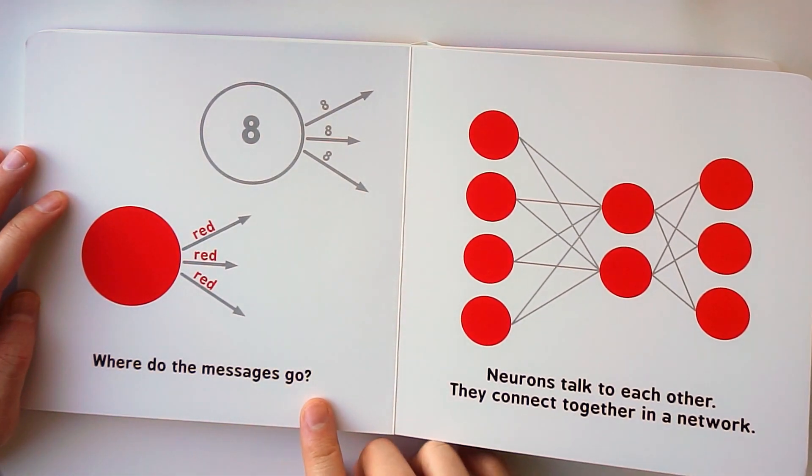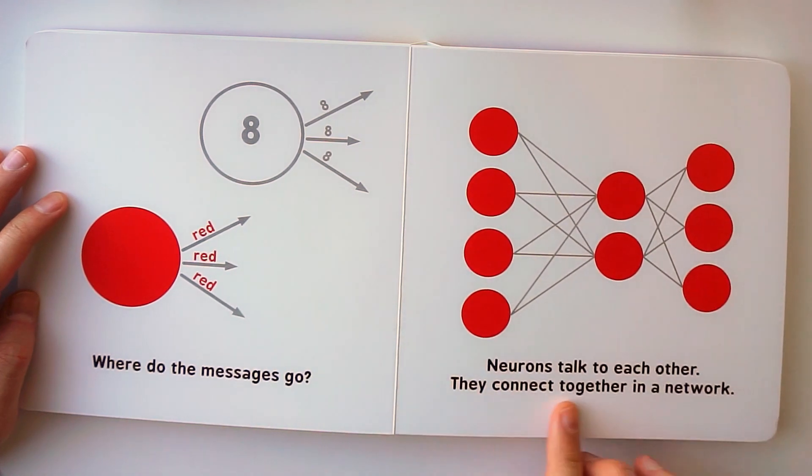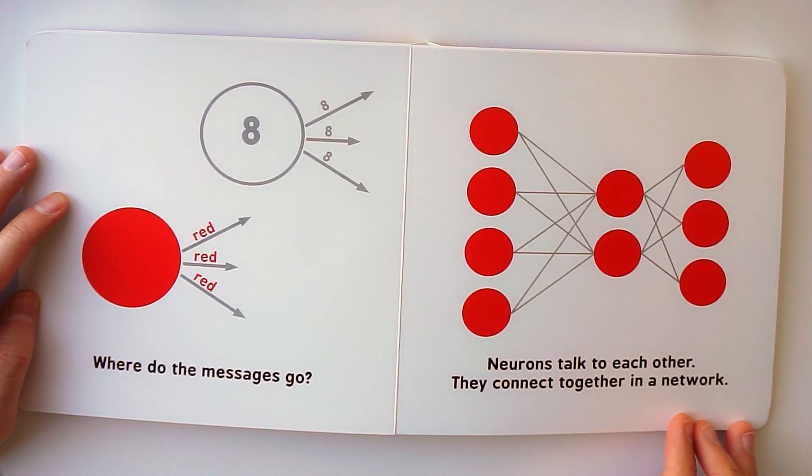Where do the messages go? Neurons talk to each other. They connect together in a network.